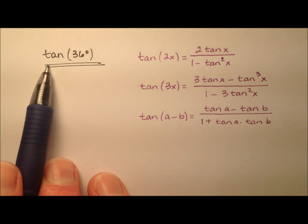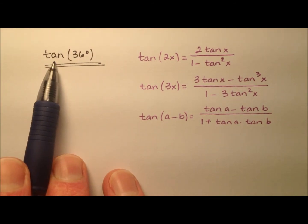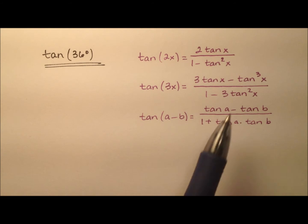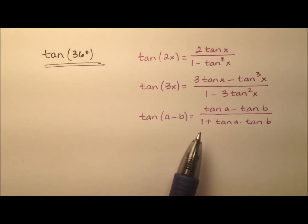In this example, I'm going to work out the exact value for the tangent of 36 degrees. And you can see over here on the right side, I have included a few trigonometric identities.